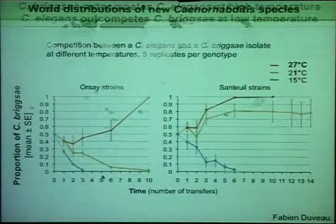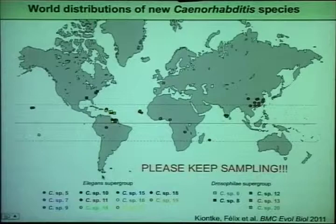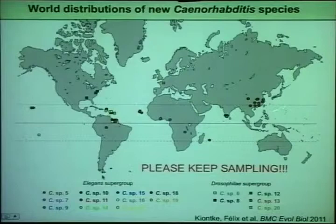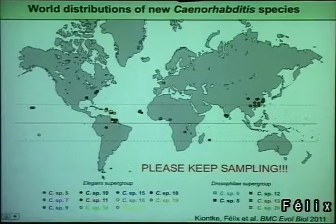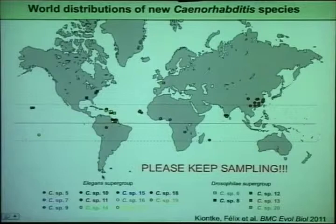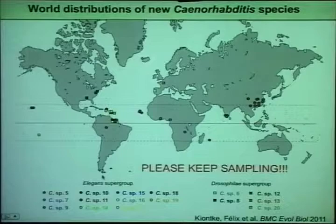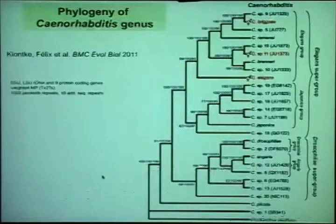We have now isolated, with the help of many people, many new species from around the world. Some are very specific to an area like species 5, some are cosmopolitan like species 11, a hemophysic species in red which is all over the tropics, and some still come up in temperate areas — so it's well possible to find new species in your backyard. Some areas of the world are totally undersampled, so please keep sampling. We are now at around species 25, and we still have many more species to come.